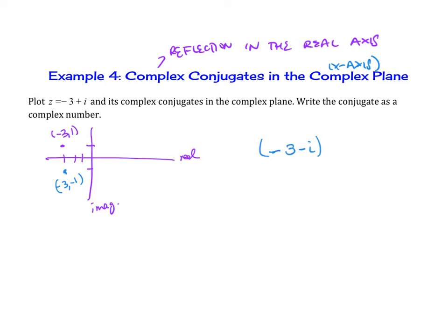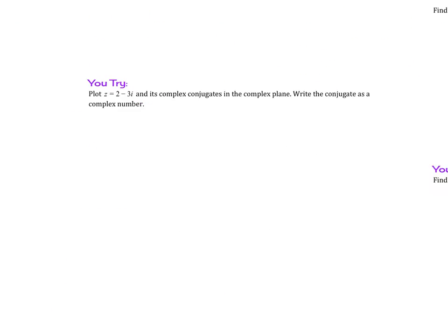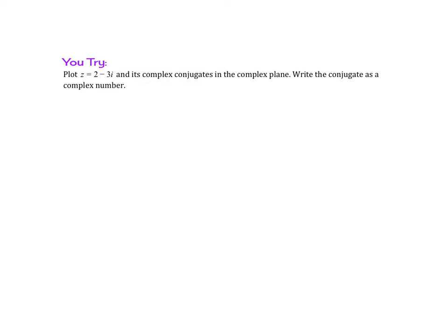It is going to ask you to graph these or pick the right graph. So try this out. We're going to plot 2 minus 3i and its complex conjugate in the complex plane, but write the conjugate as a complex number. You should have gotten this graph, and then the reflection is 2, 3. So therefore, the complex conjugate is 2 plus 3i.